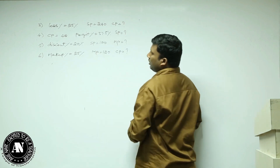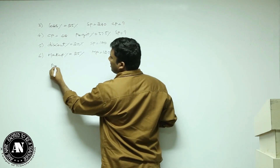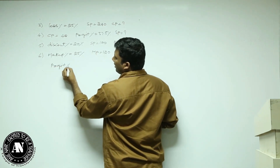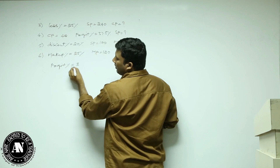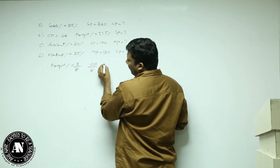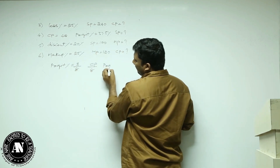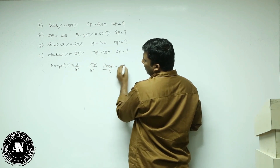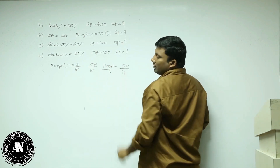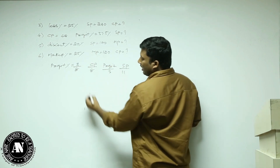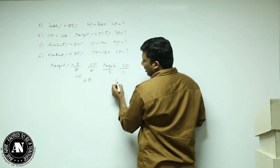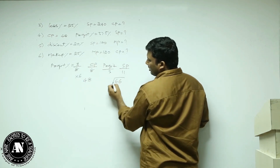Fourth: profit percentage is 37.5%, which is 3 by 8. Cost price is 8, profit is 3, selling price is 11. But cost price is not 8, it is 48 — multiply by 6. So selling price is 11 times 6 = 66.